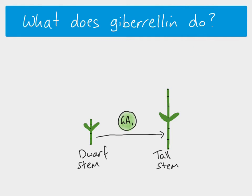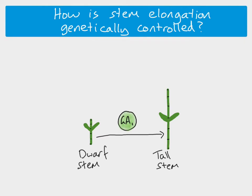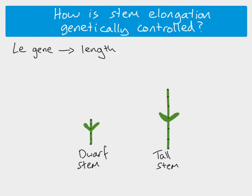It all comes down to a gene called LE — LE stands for length. There are two alleles: the dominant allele, big LE, codes for a functional enzyme.